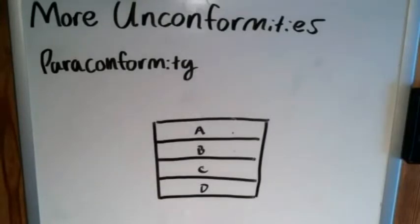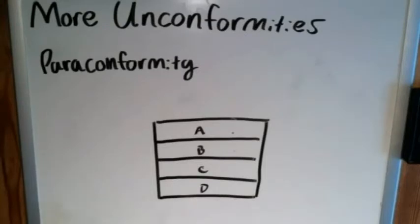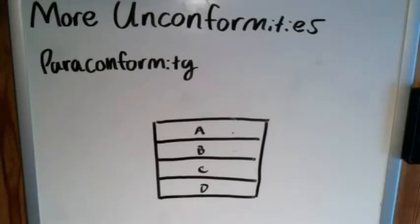Unconformities usually show some sort of gap, usually marked by erosion that takes place between the depositional sequences. But in the case of paraconformities, there's usually no erosion — they usually maintain their uniform horizontal-looking state. Instead, you can tell there's a paraconformity by the absence of a certain layer of rock.